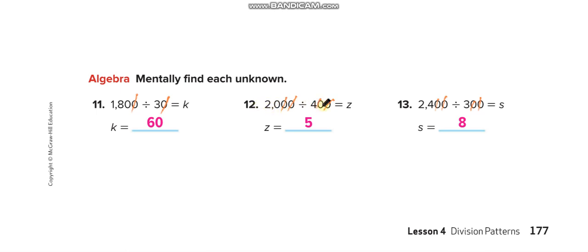So what do we do? We don't remove the zero — we keep it. We directly divide 20 by 4. We know that 4 times 5 is 20, so the answer is 5.